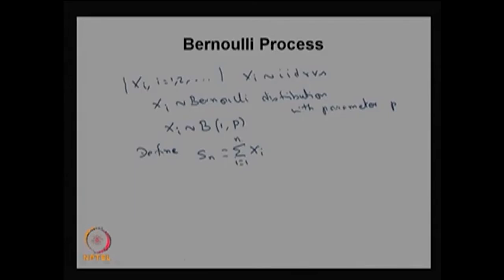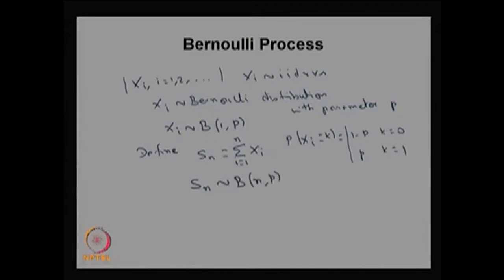Suppose X_i represents the outcome of the i-th trial, so X_i can take the value 0 or 1. Specifically, X_i takes value 0 with probability 1 − p and value 1 with probability p. Since each X_i is iid, S_n follows a binomial distribution with parameters n and p. If X_i indicates whether an arrival occurs in the i-th trial — 0 meaning no arrival, 1 meaning an arrival — then S_n denotes the number of arrivals in n trials.